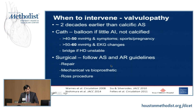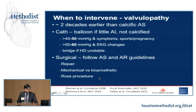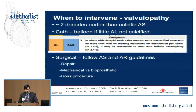For surgical repair I follow the aortic stenosis and aortic regurgitation guidelines from the 2014 ACC/AHA. Options include whether a decent repair can be achieved, the debate between mechanical versus bioprosthetic tissue valves in younger patients, and the Ross procedure. The 2018 ACHD guidelines agree that for a bicuspid valve that is stenotic and non-calcified, balloon valvuloplasty can be considered after goal-directed medical therapy.